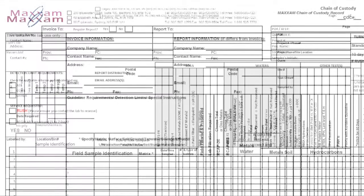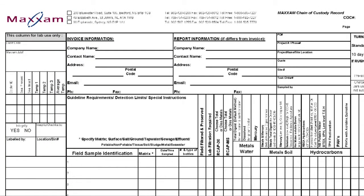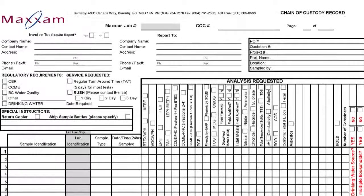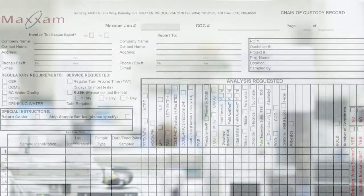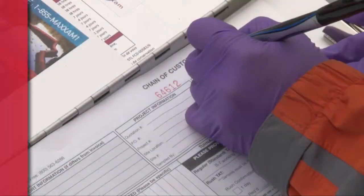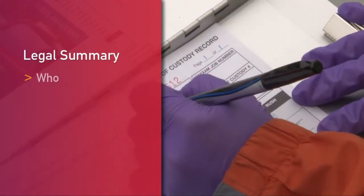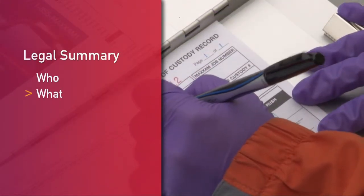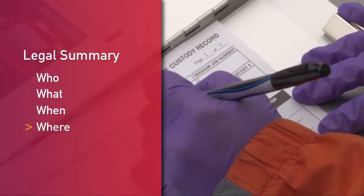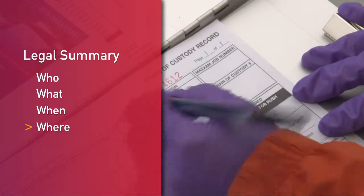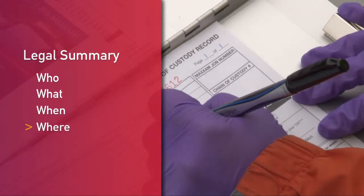When used properly, the COC is a legal summary of the sampling job that is being submitted to Maxam in a particular cooler. The form is designed to accompany samples from the field to the laboratory. It is a written record of who took what samples, when and where, including a specific location or site number.